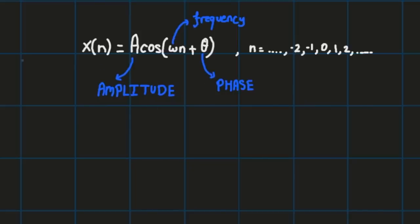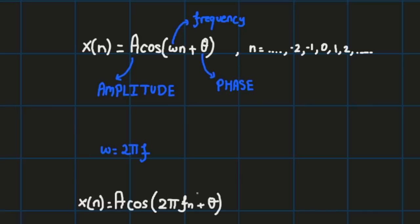As we did previously, we can express omega as 2πf, where f stands for frequency measured in hertz. In that case, we can express our sinusoid as a cosine of 2πfn plus theta. The frequency is also measured in hertz or cycles per sample.